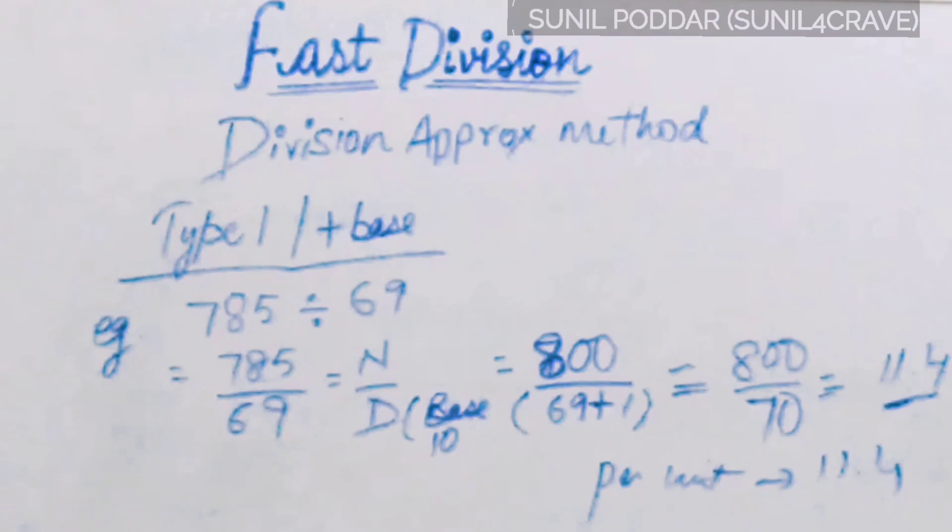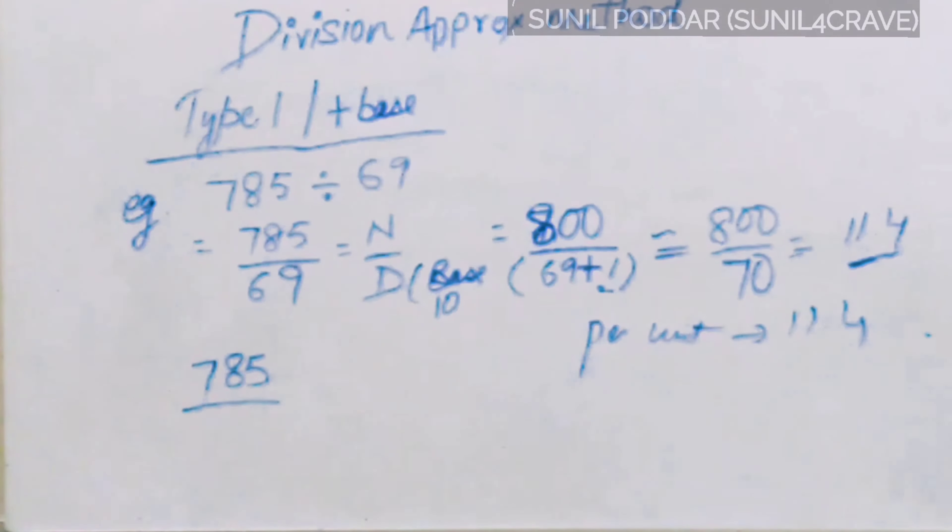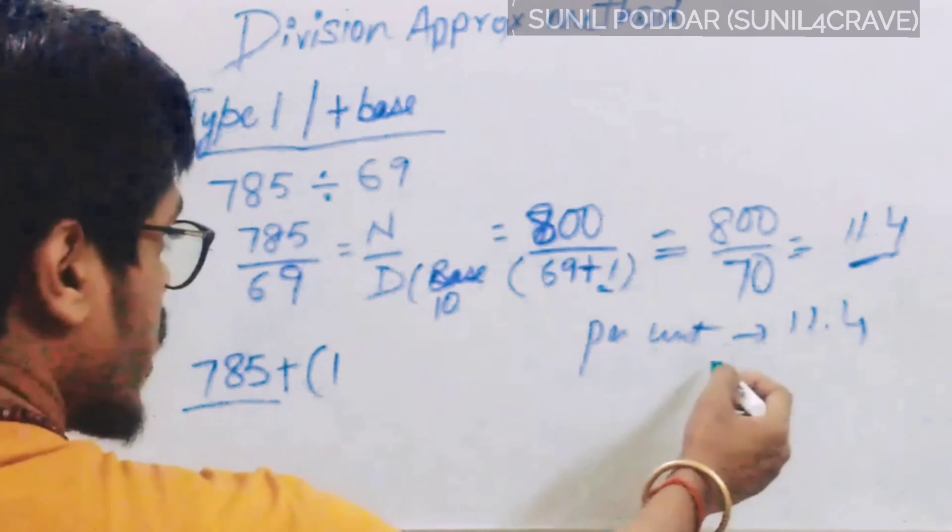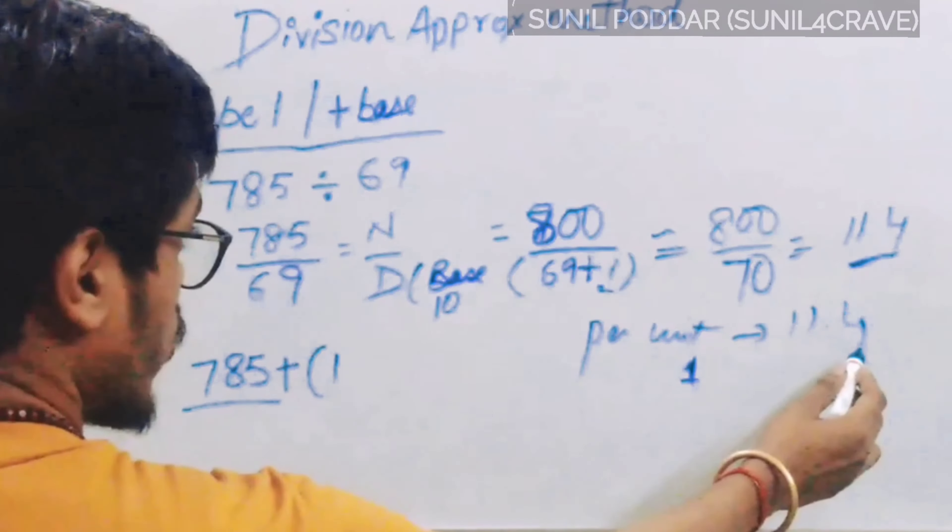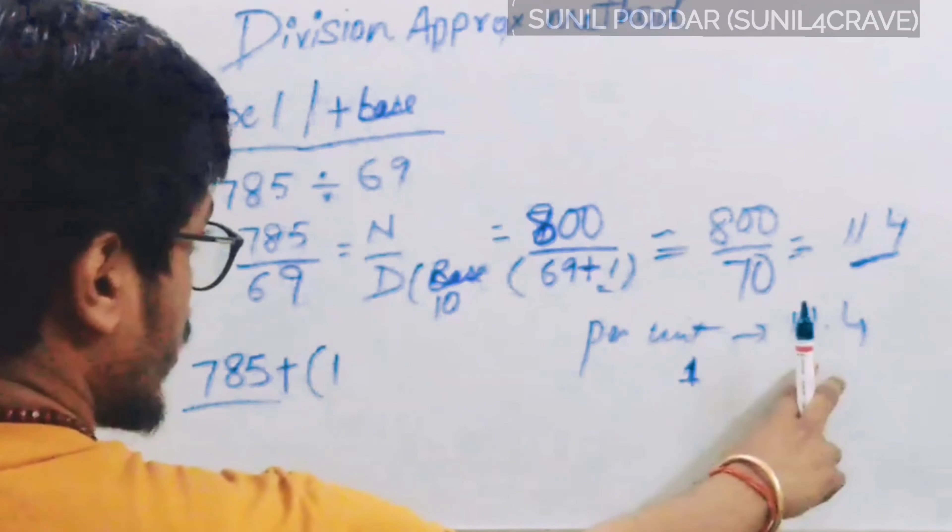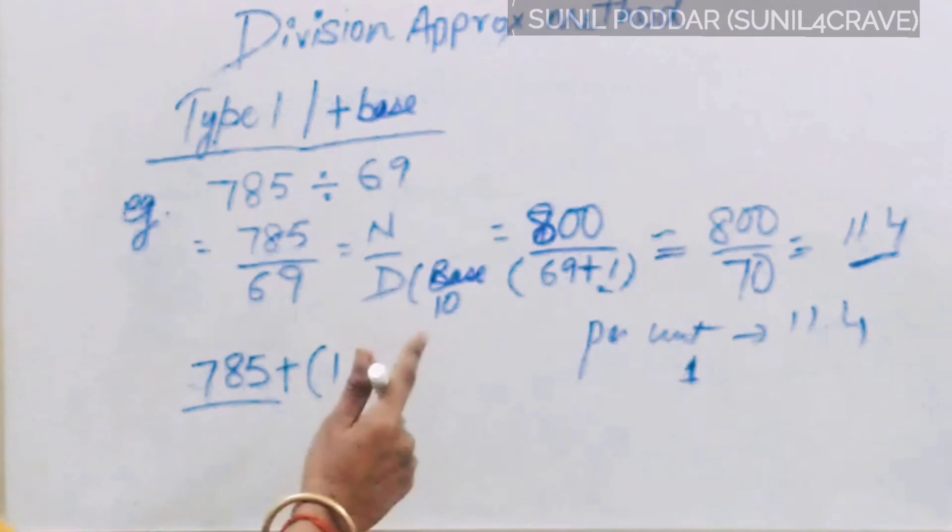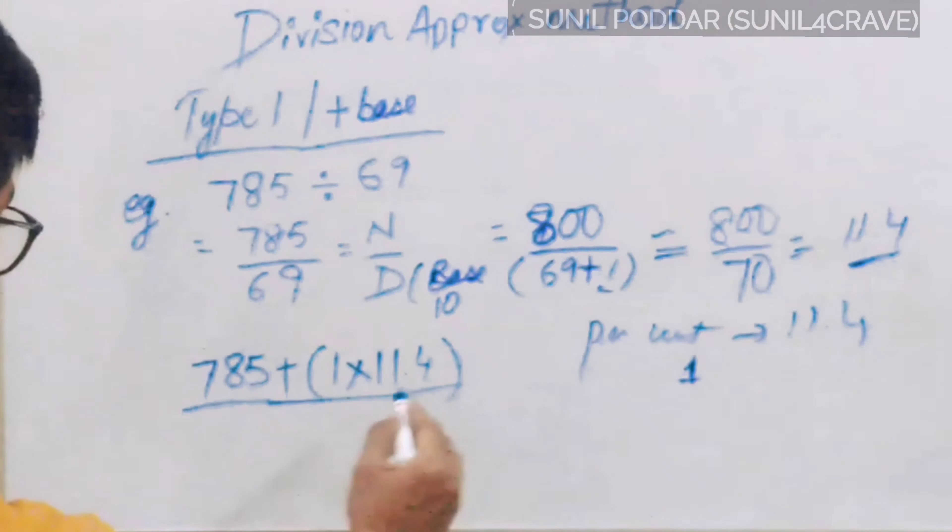So what we are going to do. 785 is our numerator. We have to divide with 69. This one is the addition concept, so we add 1. And as I told, per unit, for each unit, we have 11.4. Means for 1, we have 11.4 is the exact value.